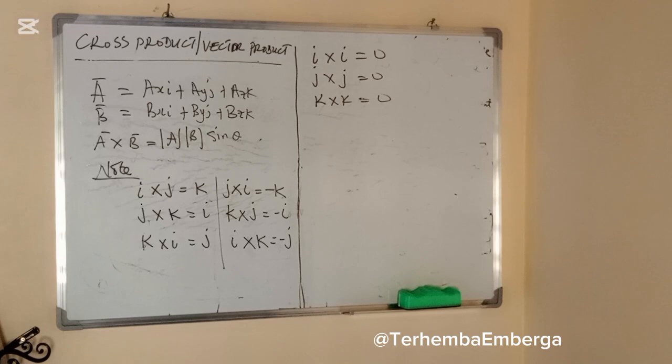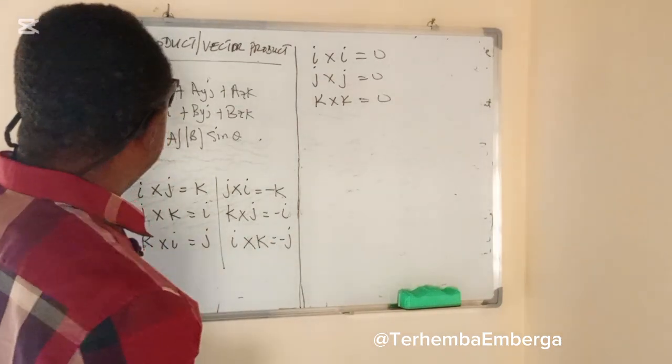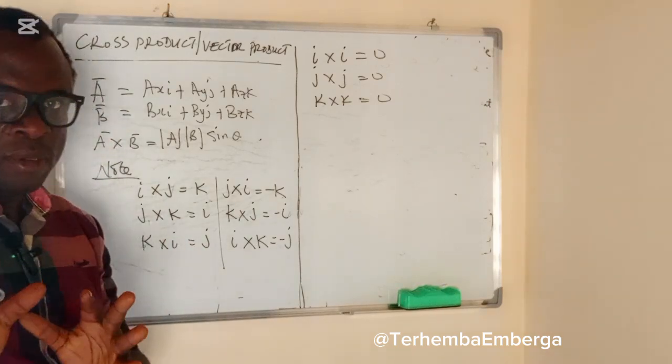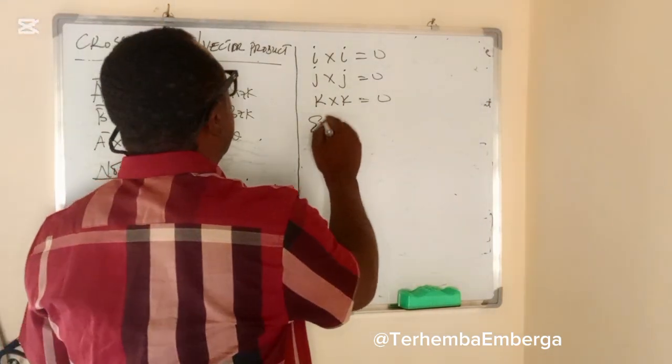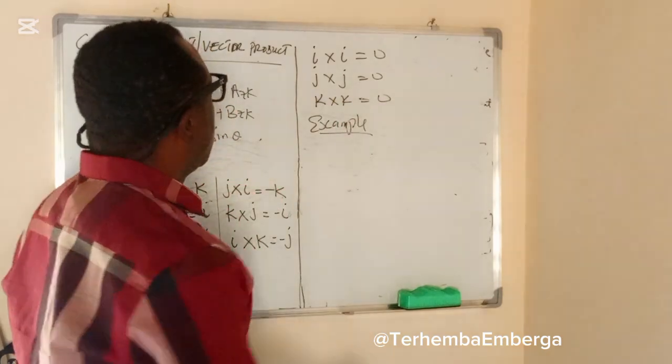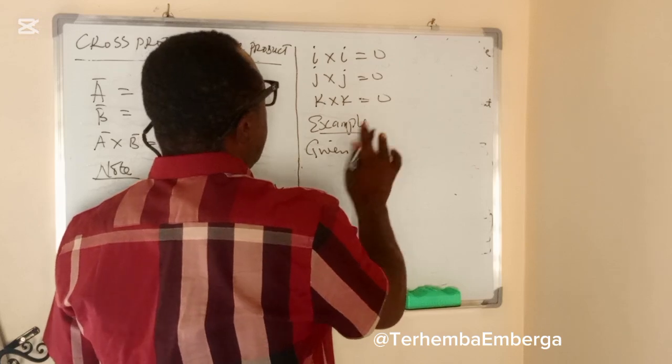So let's look at an example on how to get a cross product of two vectors. Example, given that